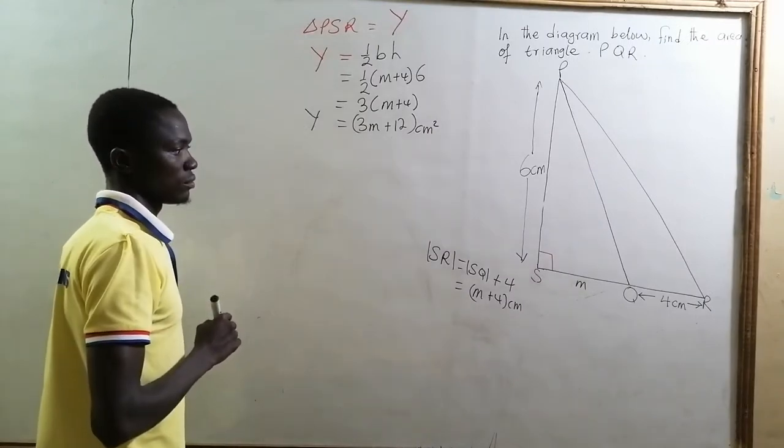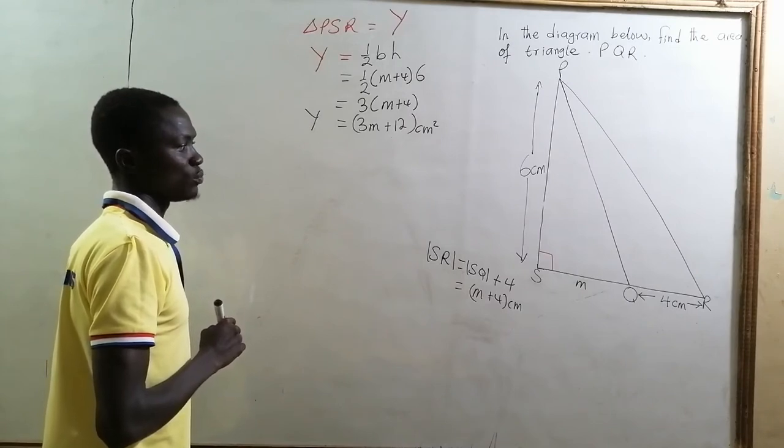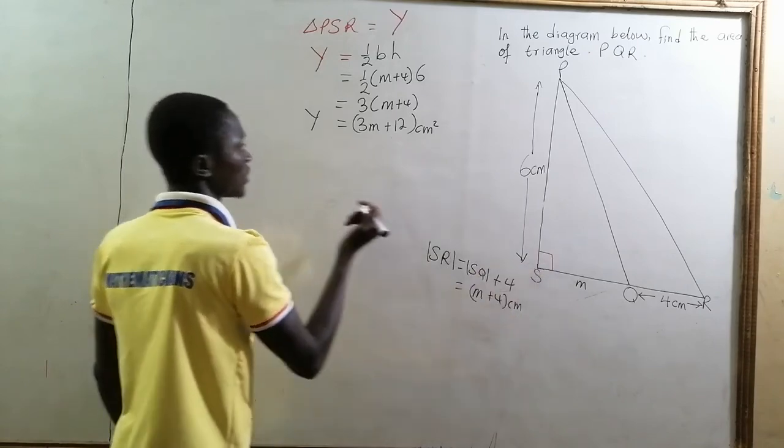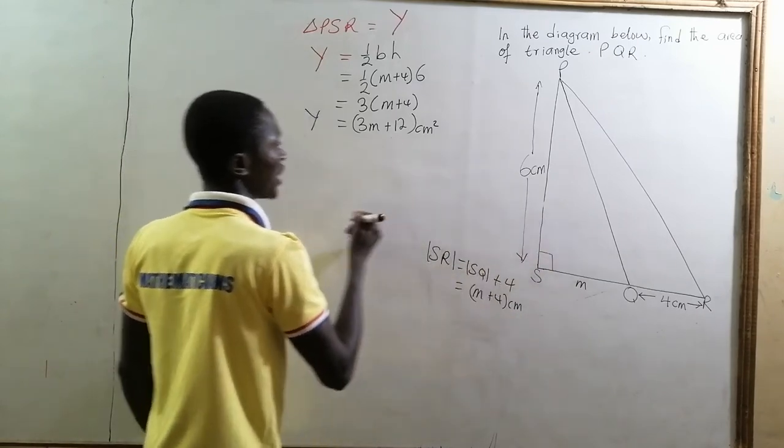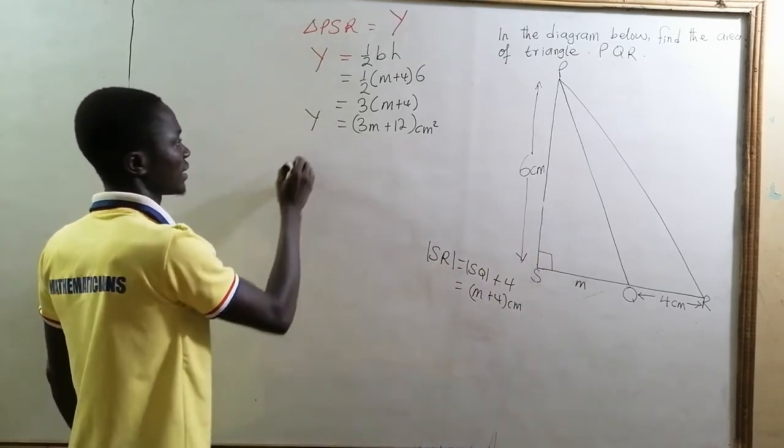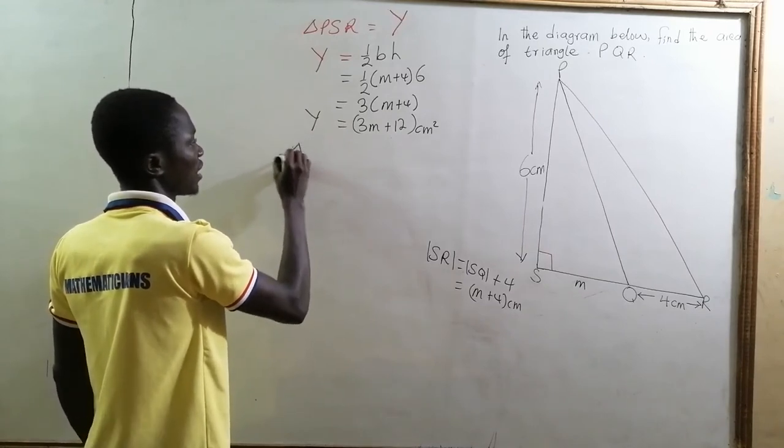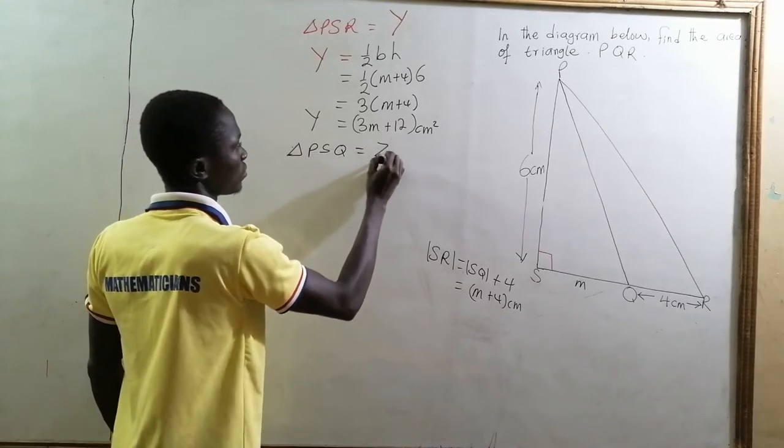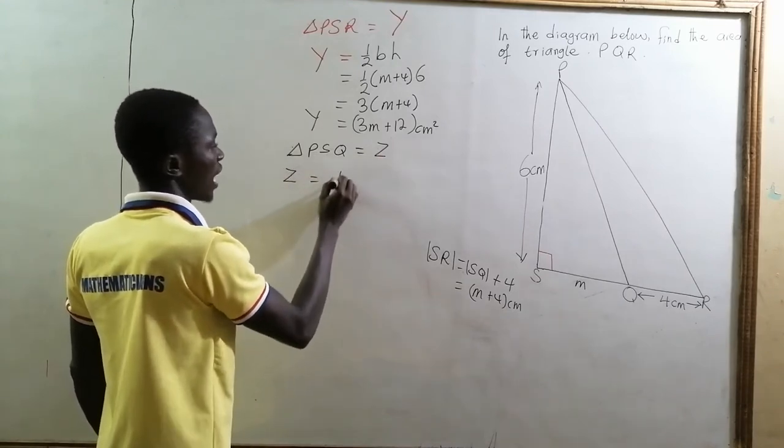Now we can also find the area of triangle PSQ because it is also a right-angle triangle at S. So let us denote that area by Z. So the area of triangle PSQ is equal to half...